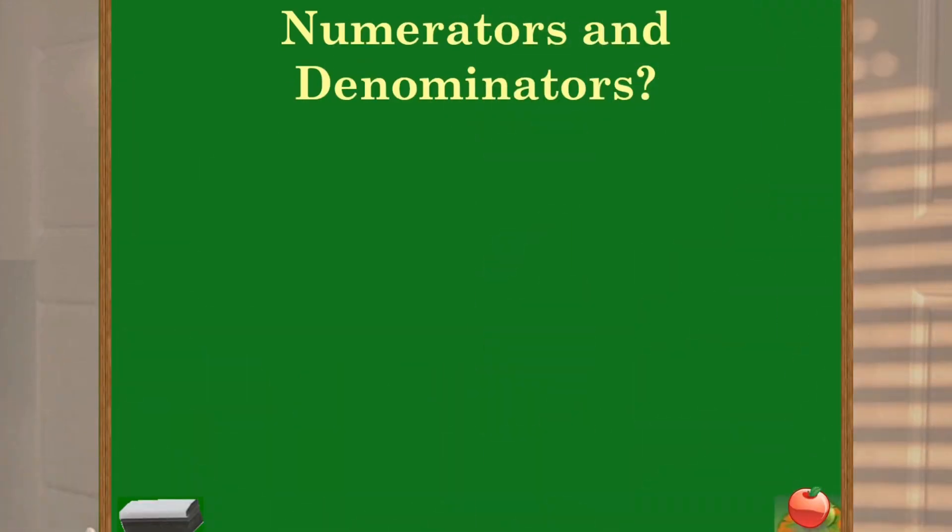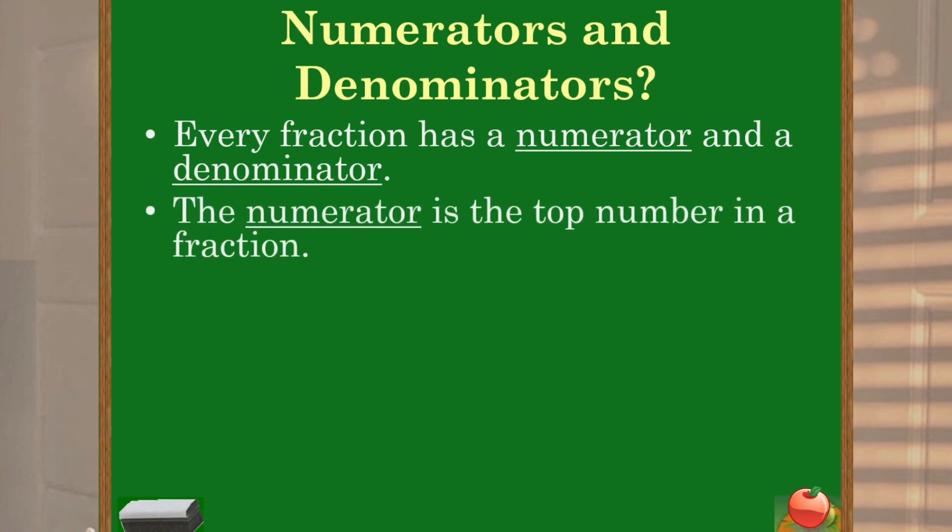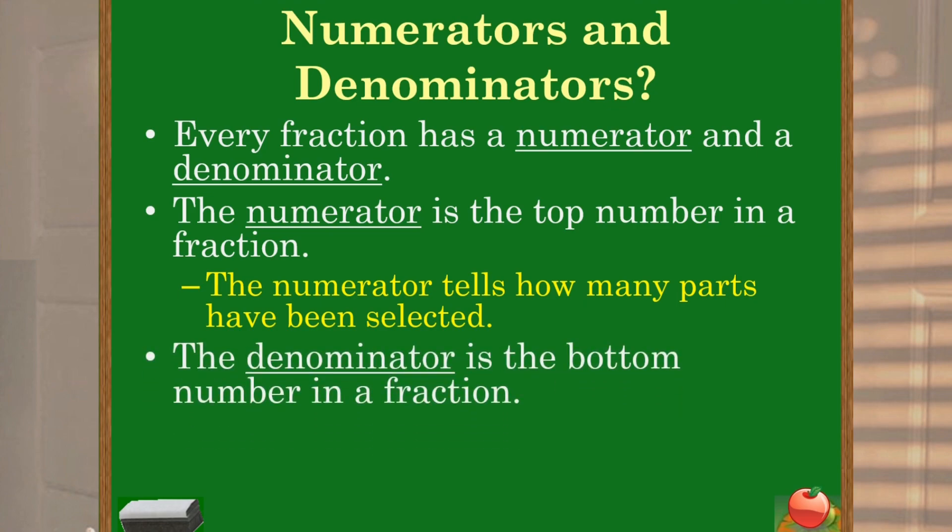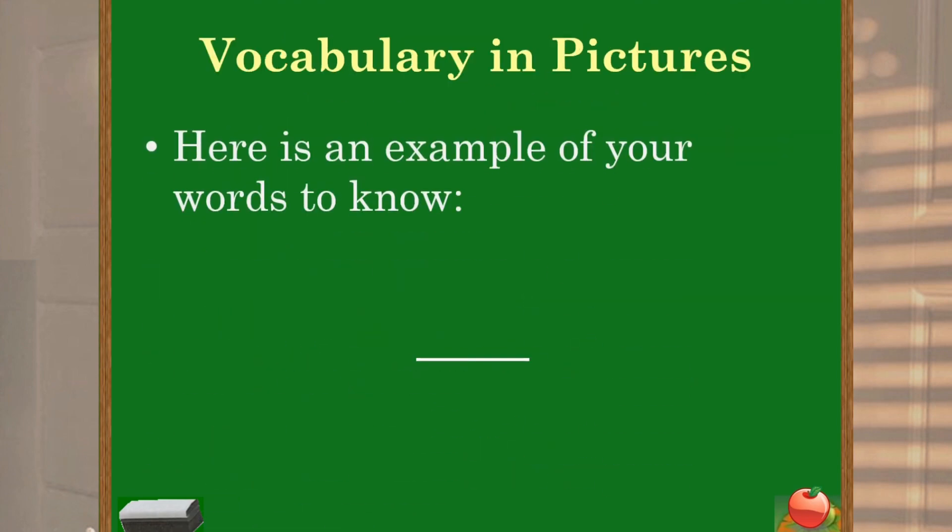So let's see what's numerator and denominators. Every fraction has a numerator and a denominator. The numerator is the top number in a fraction. The numerator tells how many parts have been selected. The denominator is the bottom number in a fraction and it tells total number of equal parts the whole is divided into.